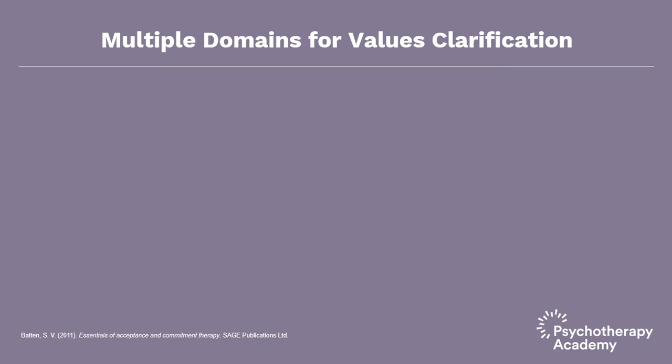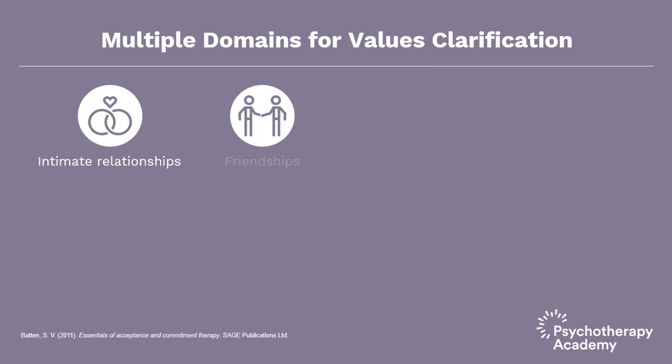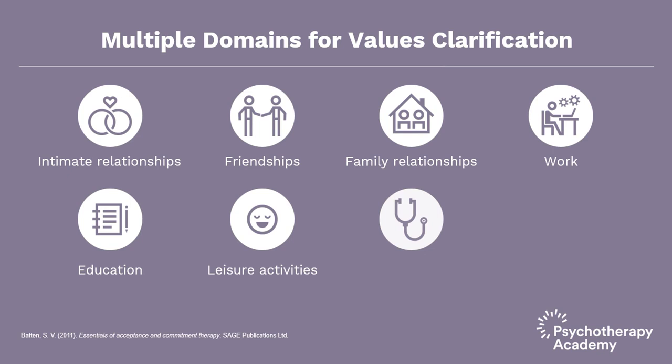There are multiple domains for values clarification. Some examples — though this is not an exhaustive list — are intimate relationships, friendships, family relationships, work, education, leisure activities, physical health, community, the environment, and personal growth. People can come up with any domain they want to identify their values.